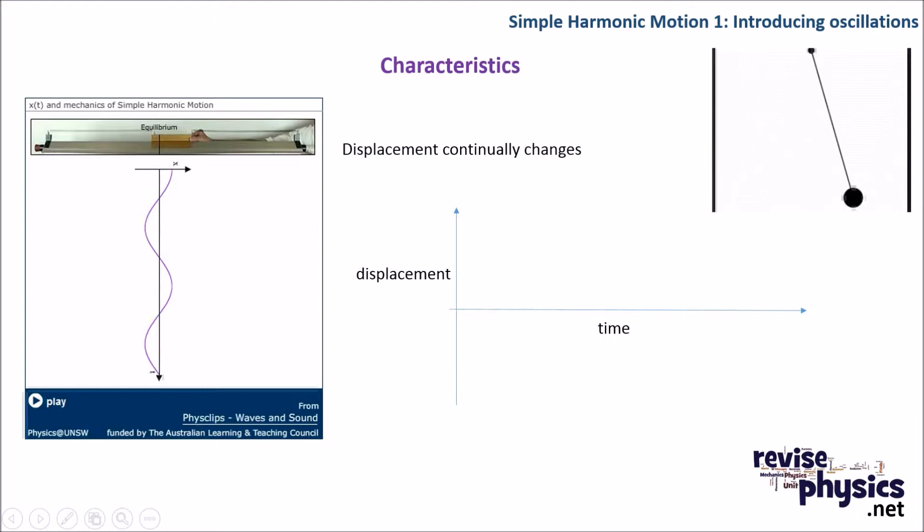So one of the things that you need to be familiar with is the displacement time graph for an oscillating system undergoing SHM or simple harmonic motion. And if we have a look at this video here, we have a trolley with two springs. It's initially been displaced, so it is a distance a or amplitude away from the equilibrium position. And you can see that as it moves backwards and forwards, the horizontal displacement from the equilibrium is constantly changing.